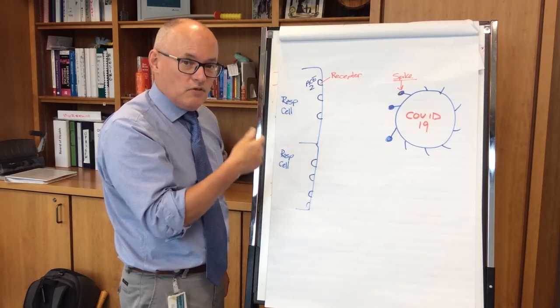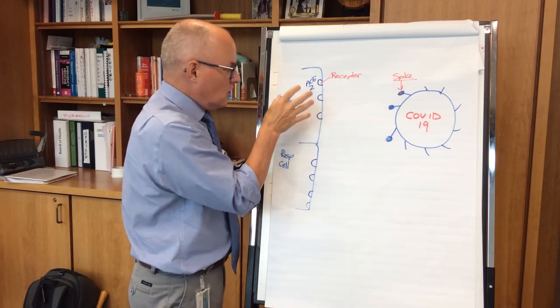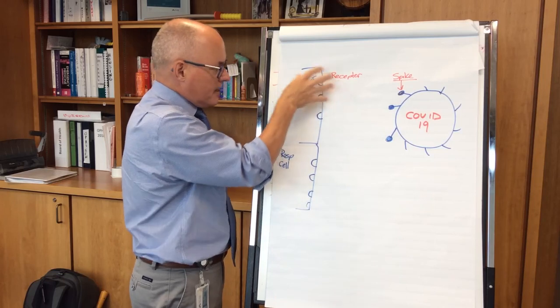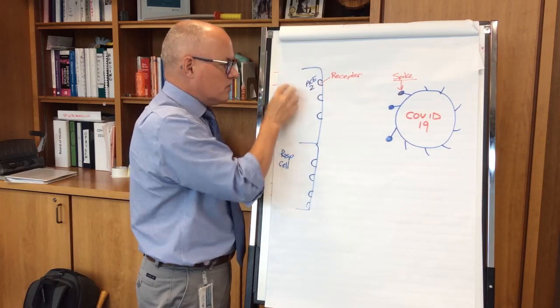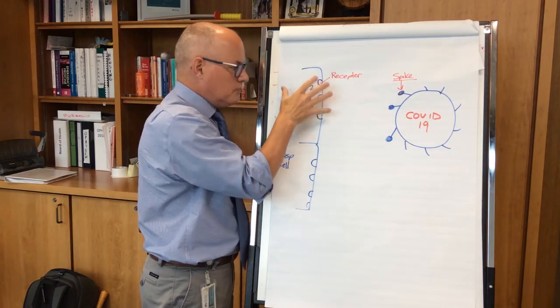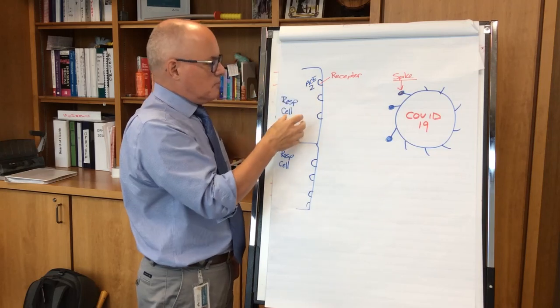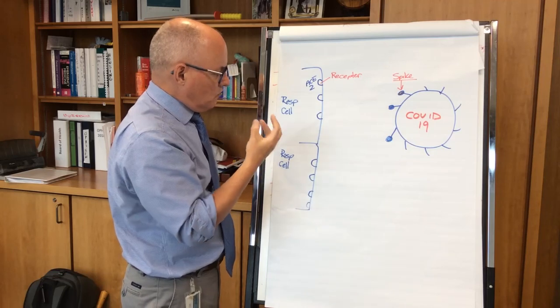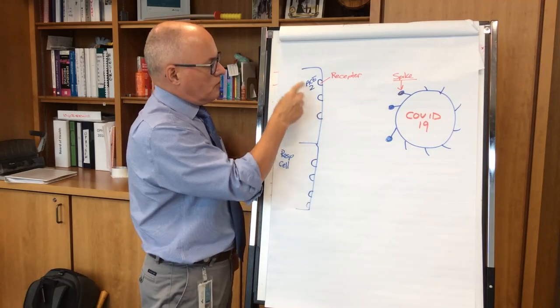That's all from this virus binding to the ACE2 receptor, getting inside your cell, taking over its metabolism, and then rupturing the cell. So some of the symptoms you can now understand are from the cells at the back of your throat getting infected, invaded, and actually bursting from too much virus inside them.